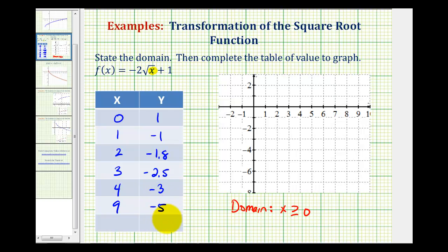You can see why if we had a choice, we would select x values so that the radicand would be a perfect square. Now let's go ahead and plot our points.